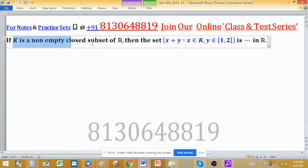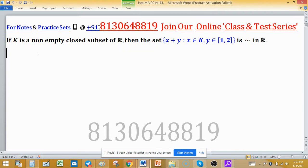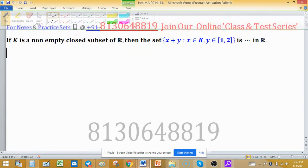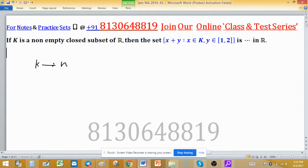If K is a non-empty closed subset of R, then the set X plus Y when X is coming from K and Y is coming from closed interval [1,2] is... what topology on this set? As given, K is non-empty and closed subset of R.